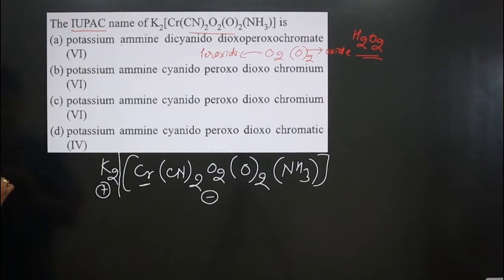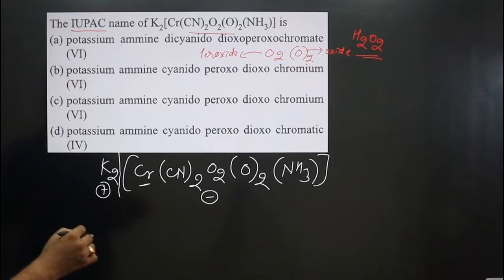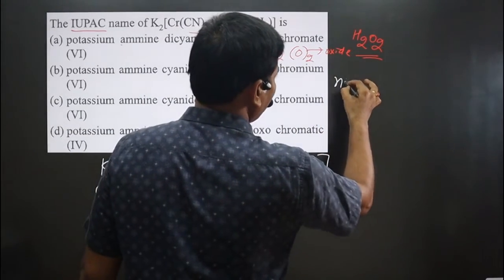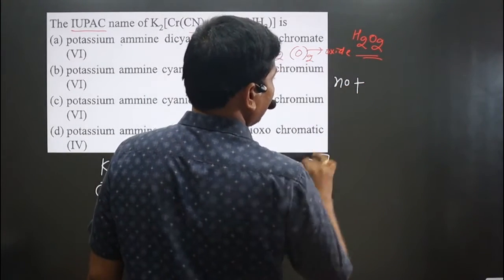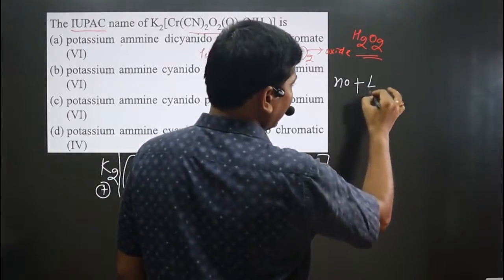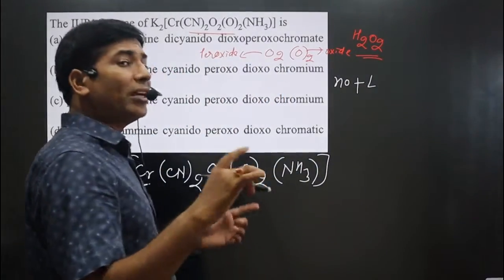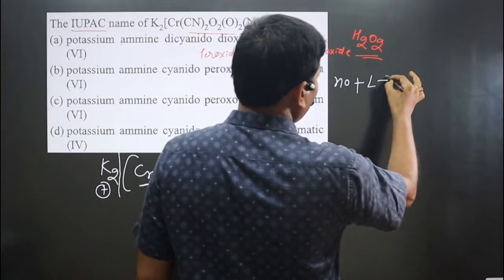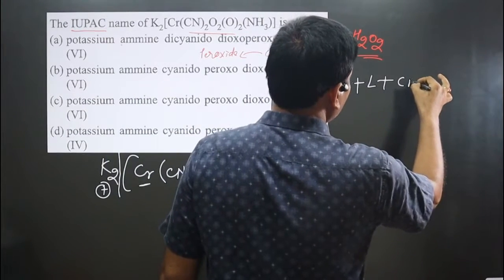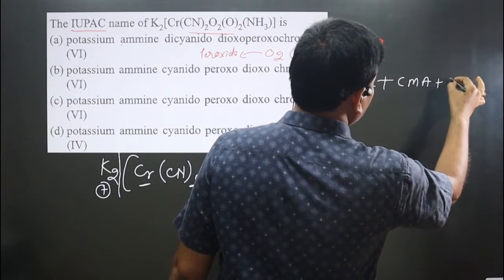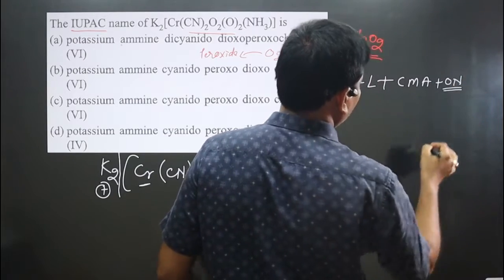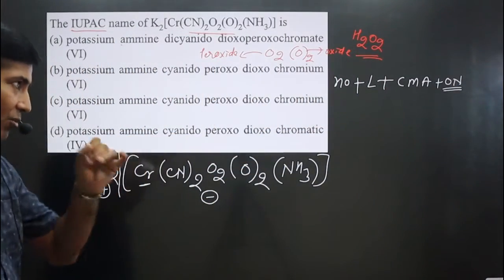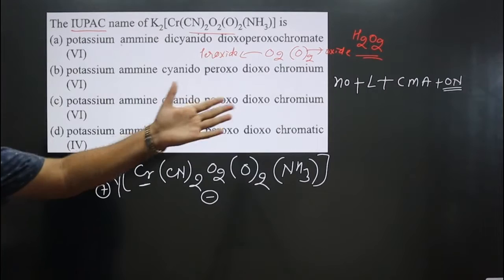The naming order for coordination complexes is: first, the number and type of ligands — if more than one type is present, they are arranged in alphabetical order — then the central metal atom, and finally the oxidation number of the central metal atom written in Roman numerals.